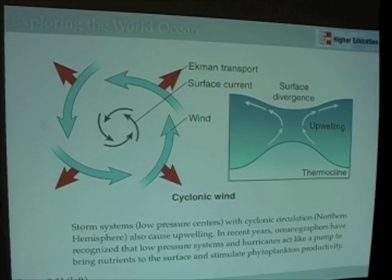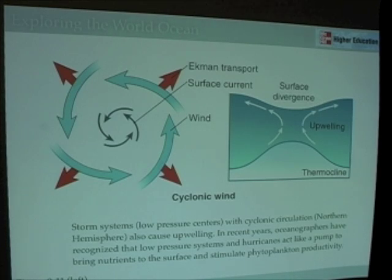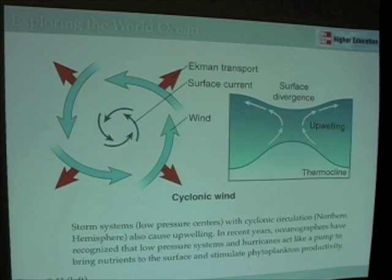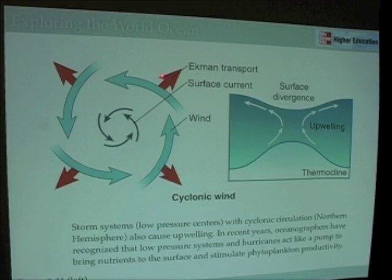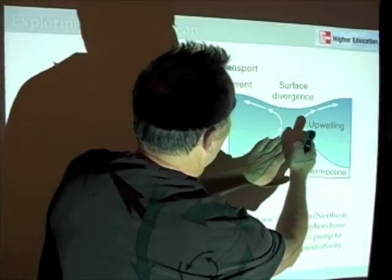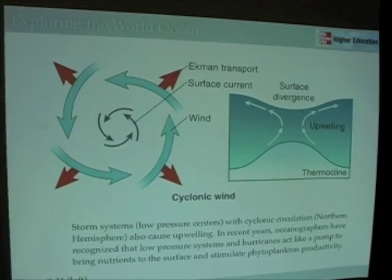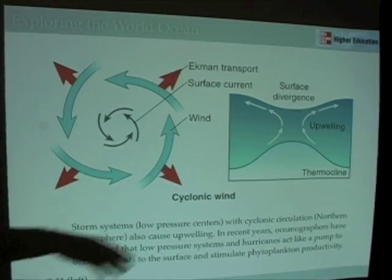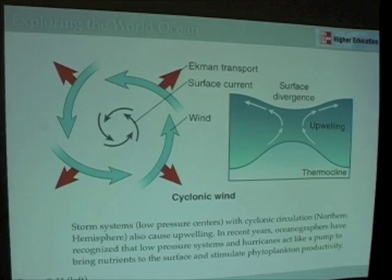Upwelling can also be caused by storm systems. A hurricane, with its cyclonic wind direction, causes surface currents to move via Ekman Transport, generating divergence in the cyclonic system. This causes doming of the thermocline and upwelling. Low pressure systems — whether a general low pressure system or a hurricane — generate surface divergence and upwelling, which can enhance ocean productivity in the regions where they occur.